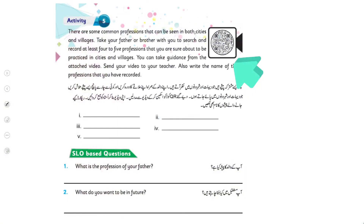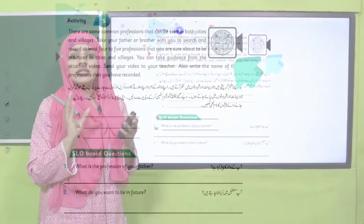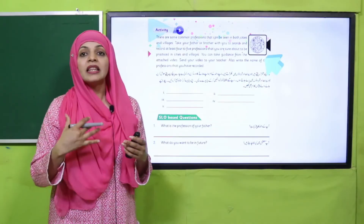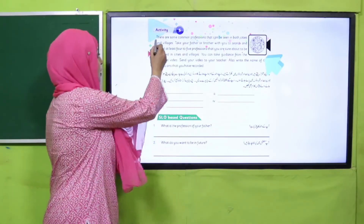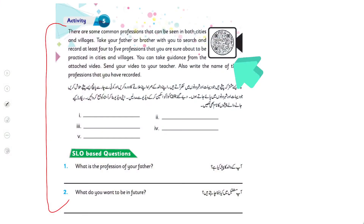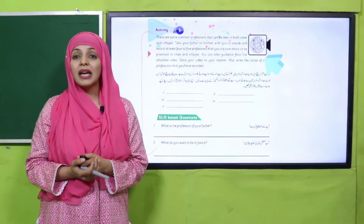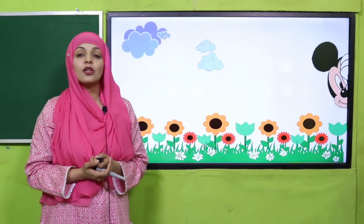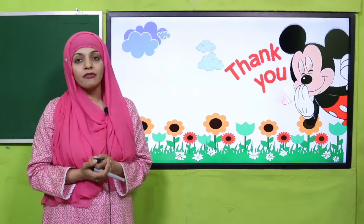Scan the second QR code provided with SLO Number Five. After scanning, watch the attached video. Then children will be able to see the given activities and question answers that they will complete. Complete your work carefully and on time. Thank you so much, and Allah Hafiz!